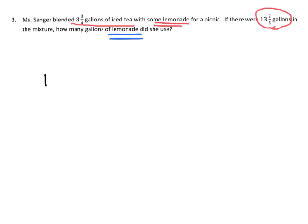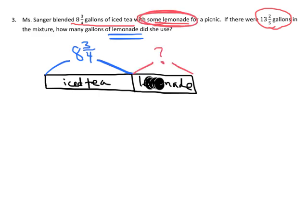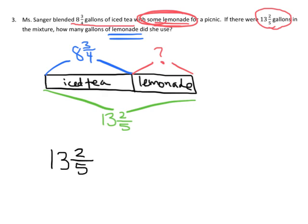So basically we've got some iced tea, and then we've got some lemonade. And we know that there was 8 3/4 gallons of iced tea. We don't know how much lemonade there was because it says some lemonade, but we do know that the total is 13 2/5. So the way we're going to find our answer for the lemonade is through subtraction and it's going to be 13 2/5 minus 8 and 3/4.